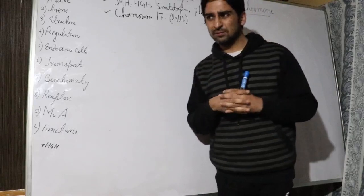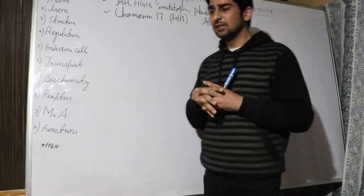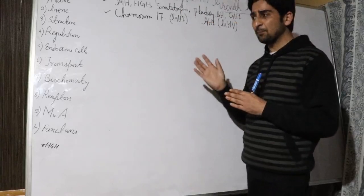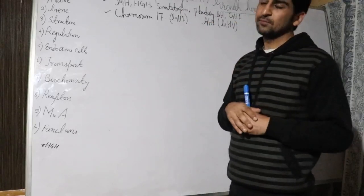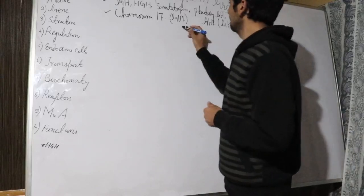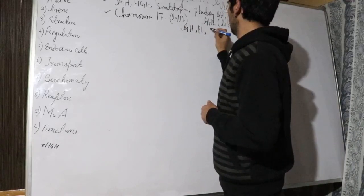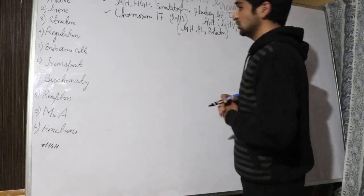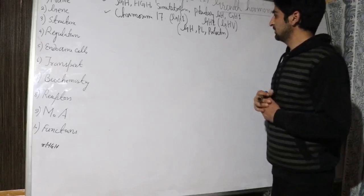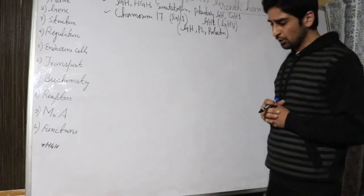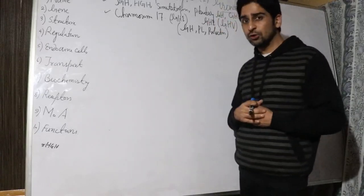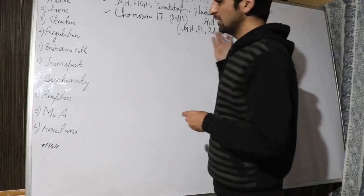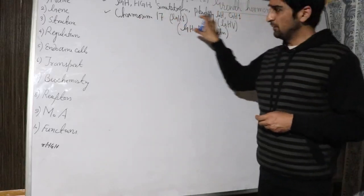These three hormones — growth hormone, prolactin, and placental lactogen — are homologous hormones with similar functions of growth and lactogenic activity. Placental lactogen is also called human chorionic somatomammotropin. 'Somato' means growth and 'mammotropin' relates to lactation. So these are homologous hormones with overlapping functions.